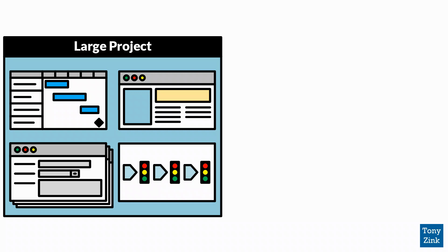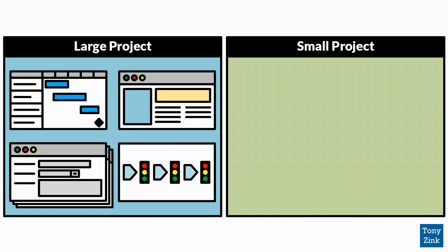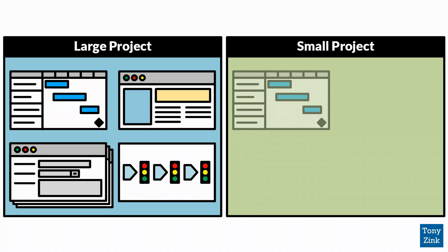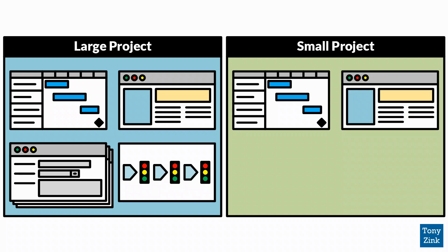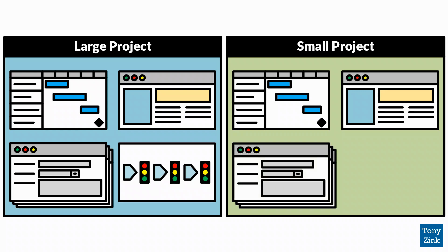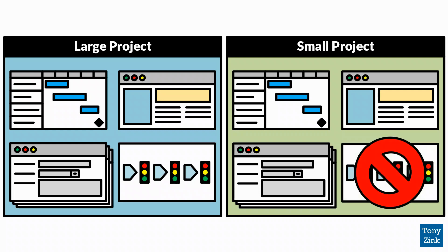Small projects, on the other hand, are much simpler to deal with. So you create a small project Enterprise Project Type that bundles up a small project schedule template with only a handful of milestones and tasks, a project site template that team members can use to share a few documents and track the occasional issue or risk, a simpler set of project detail pages, or PDPs, for tracking a few basic project attributes, and no electronic workflow, since small projects are much more informal and don't need the rigor of a larger project.